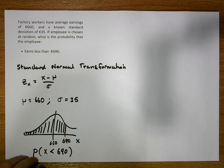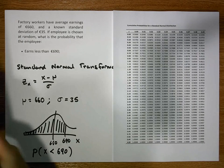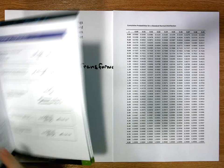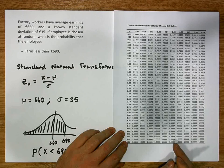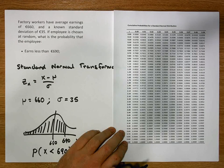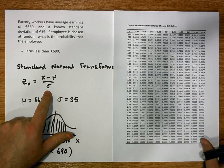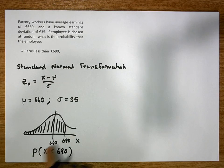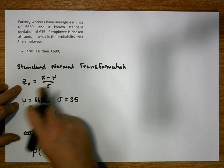Our tables represent cumulative probabilities for a standard normal distribution, which has a mean of 0 and a standard deviation of 1. Unfortunately, we cannot look up these areas directly. We have to apply the standard normal transformation to our values to transform them to the standard normal curve.